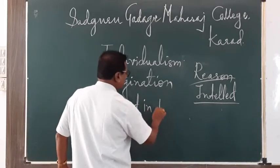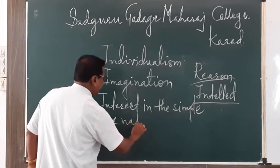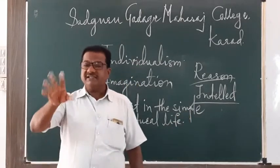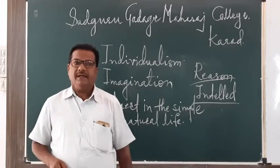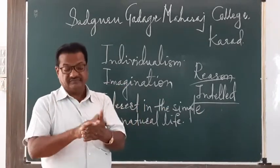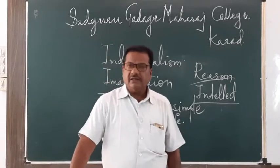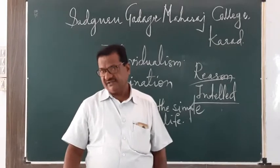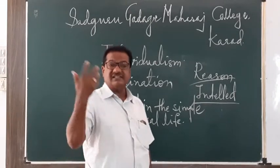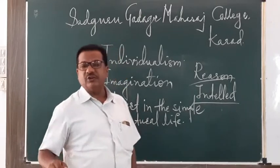Another characteristic is interest in the simple and natural life. Romantic poets have written their poems on nature — trees, forests, real nature. They have written about almost all the objects of nature: human beings, the sun, the moon, the mountains, the trees, the sea, and birds. Nothing escaped the attention of the romantic poets.